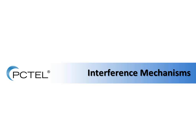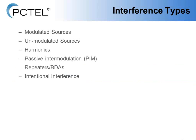Now I want to move on to what the interference mechanisms actually are. The interference types can be categorized as: modulated sources, unmodulated sources, harmonics, passive intermodulation (also known as PIM), repeaters or bi-directional amplifiers (BDAs), and intentional interference.